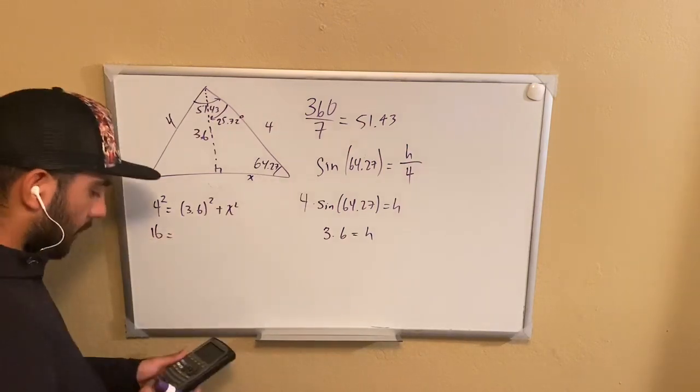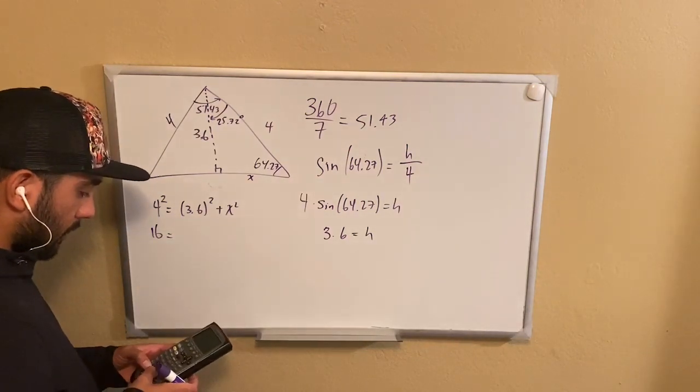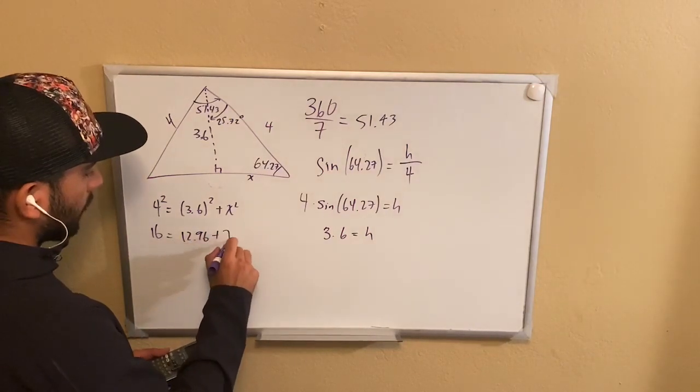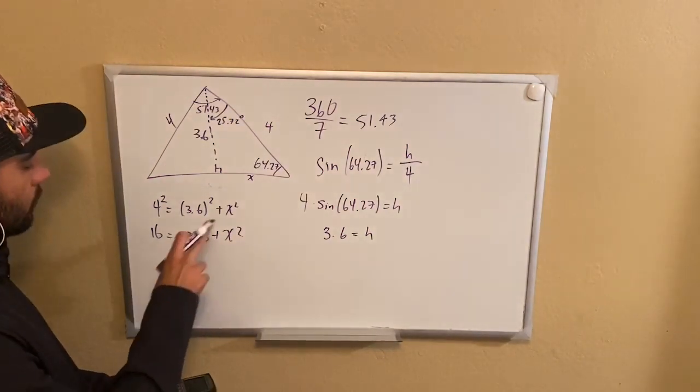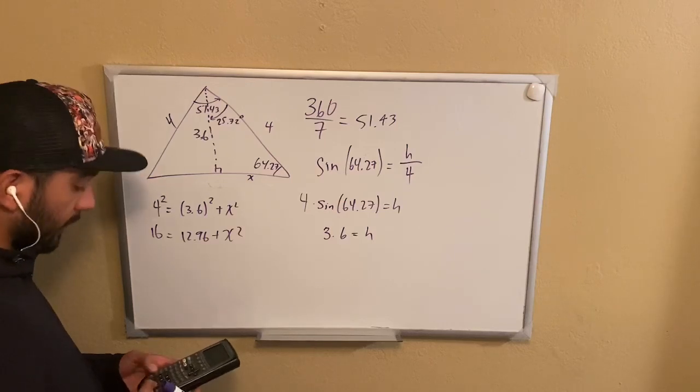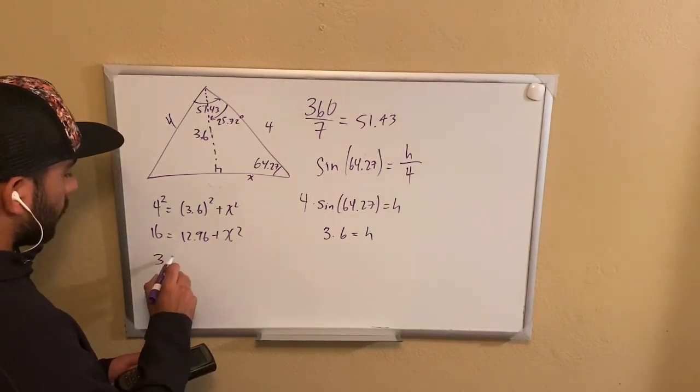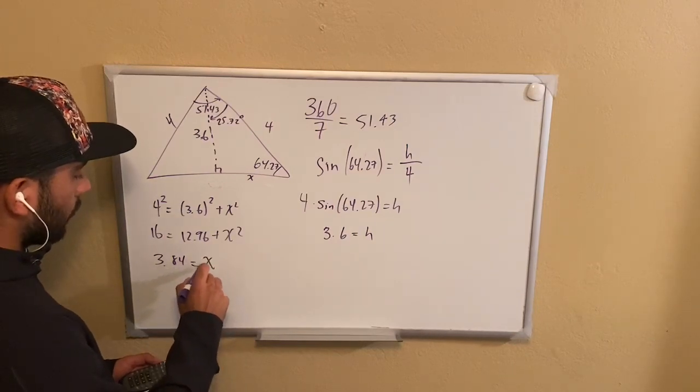We have 16. Let's see, 3.6 squared. So we get 12.96 plus X squared. Let's go ahead and subtract 12.96 to the other side.